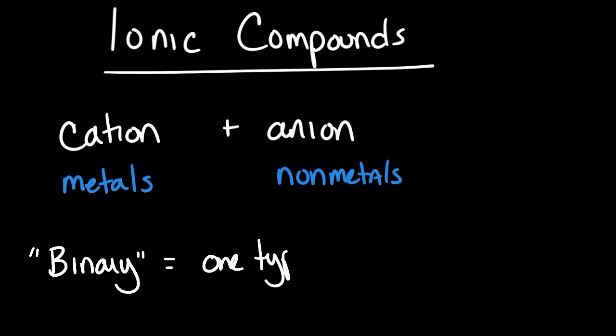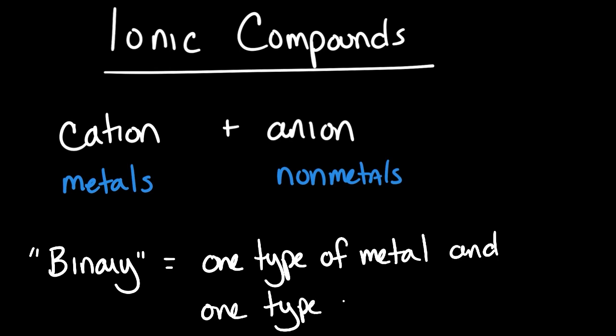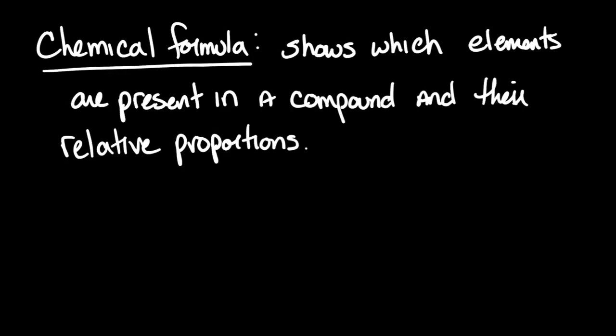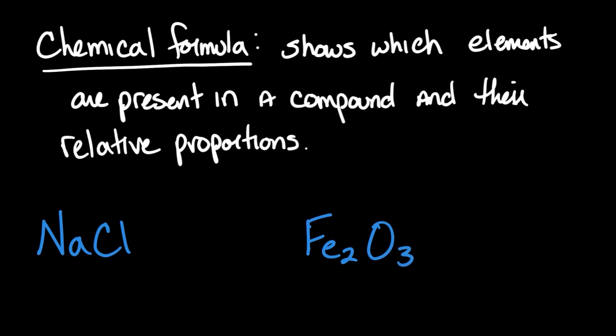The compounds we'll be naming in this video are binary compounds, which means there are only two types of elements present — a nonmetal and a metal. We'll also be writing chemical formulas, which show us which elements are present in a compound as well as their relative proportions. For example, NaCl shows us that sodium and chlorine are present in a 1 to 1 ratio, and Fe2O3 shows us that iron and oxygen are present in a 2 to 3 ratio.